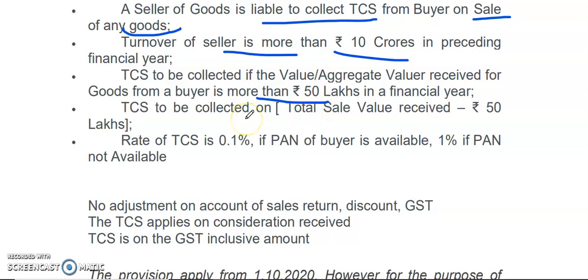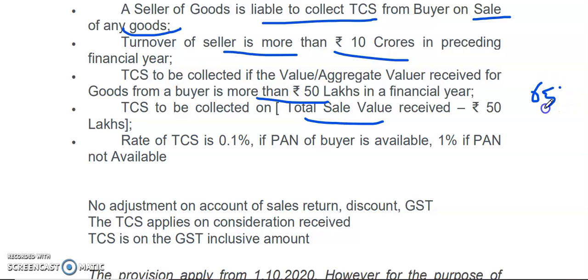The TCS is collected on the value which exceeds Rs. 50 lakhs. For example, if the total value received is 65 lakhs, then the TCS shall be collected on 65 minus 50 lakhs — so the TCS shall be collected on 15 lakhs only.